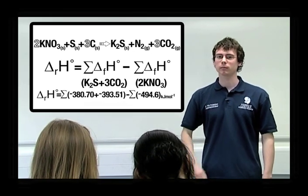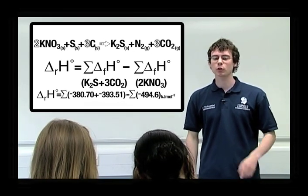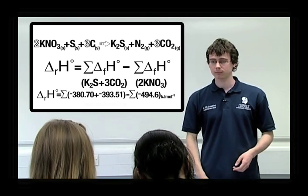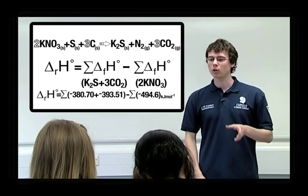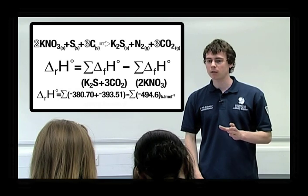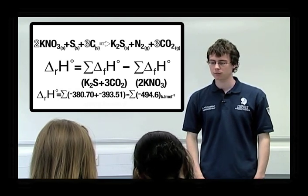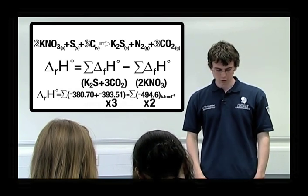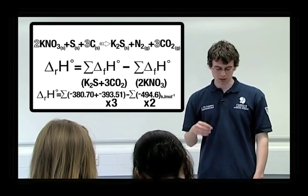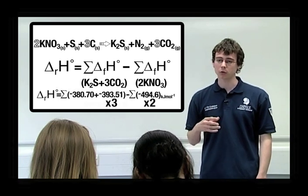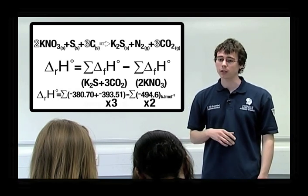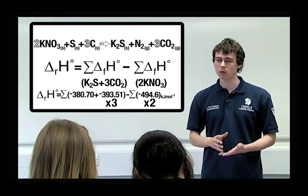But are these enthalpy values correct? Yes. No. You're both wrong. What? How's that then? Because you're not right, so you're wrong. But why are we wrong? Well, look at the compounds and think about the number of moles that are involved. Oh, it's three carbon dioxide and two potassium nitrates. Correct. We have to multiply the values by the number of moles present. This is because all the values are only for one mole.